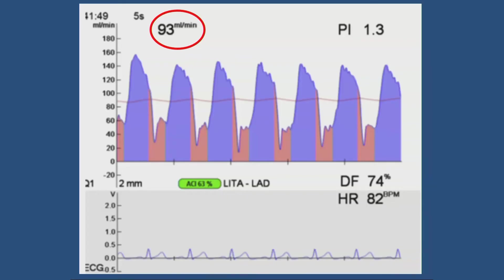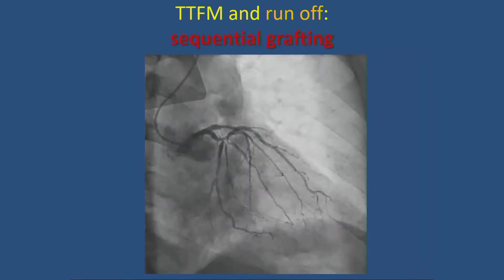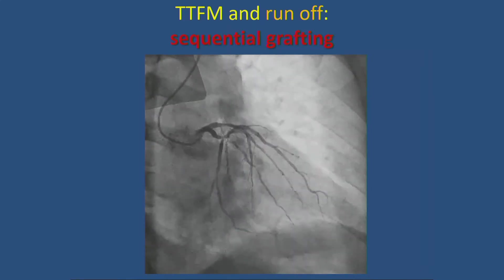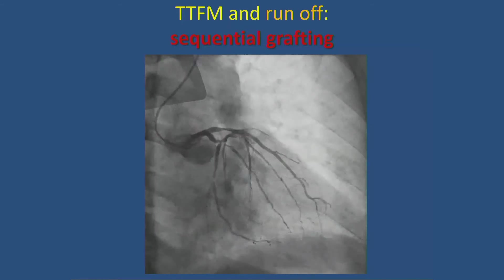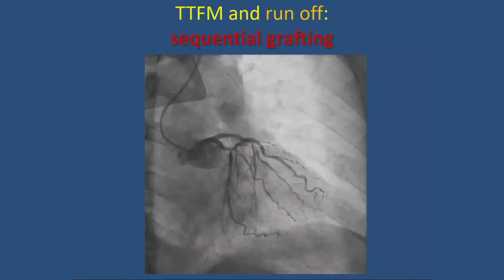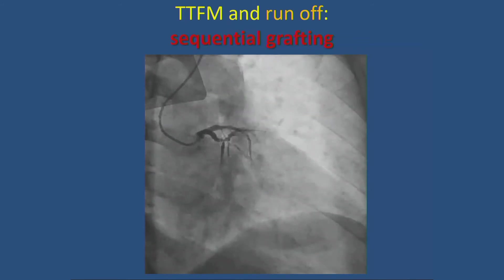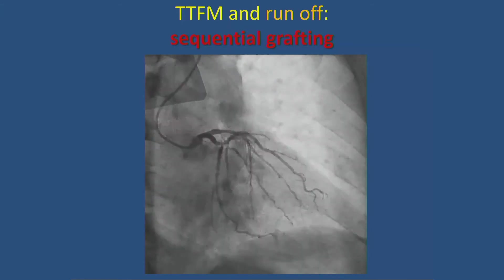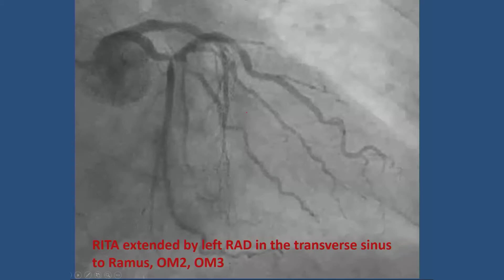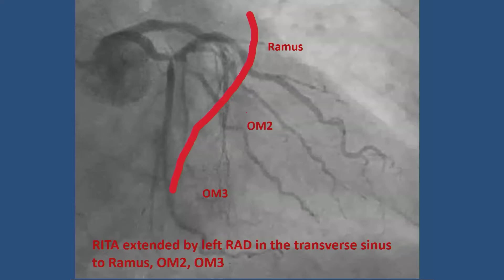You find the mean graft flow on the upper left part of your screen. Here is an example of a patient in whom I did multiple sequential grafting. I want to focus on how you can see the impact of sequential grafting on your flow by placing bulldogs at different parts. In this patient, I used the right mammary extended with the left radial through the transverse sinus to bypass the ramus, OM2, and OM3 — a non-touch aortic technique. The left mammary goes to the LAD.